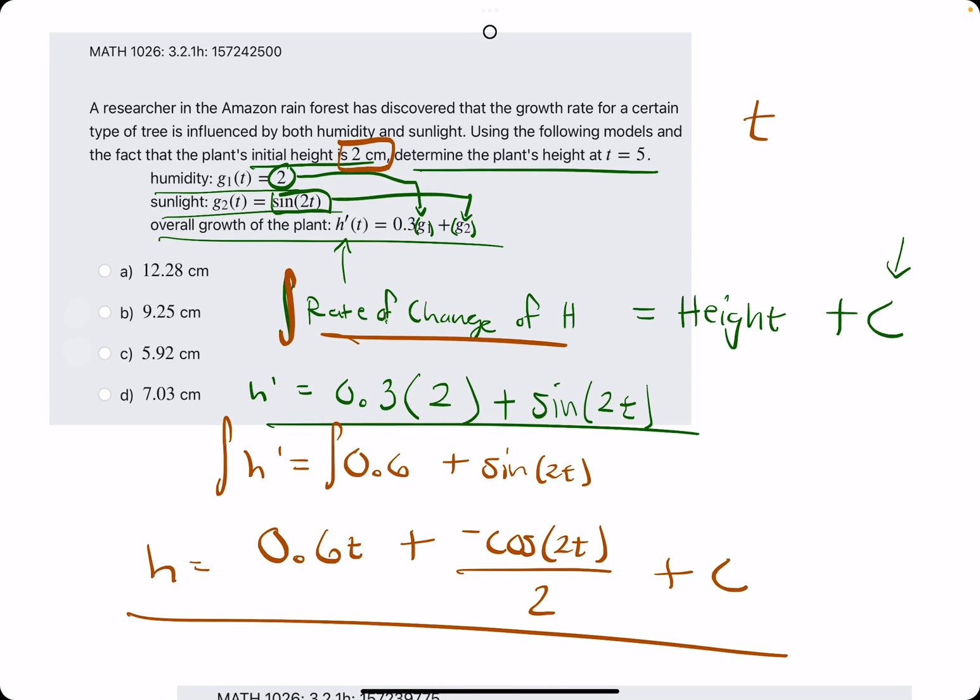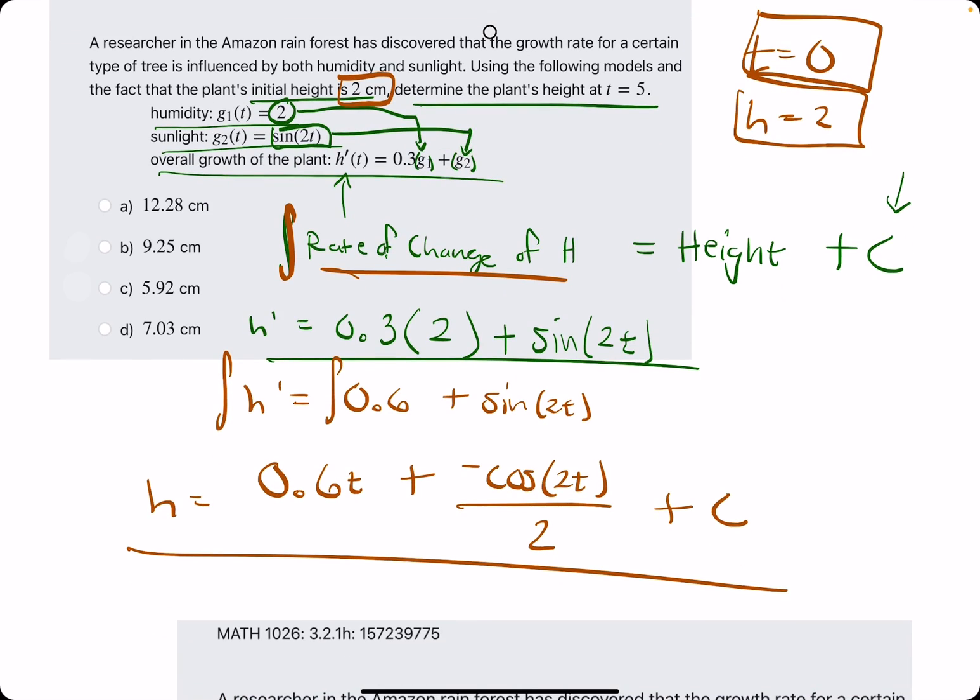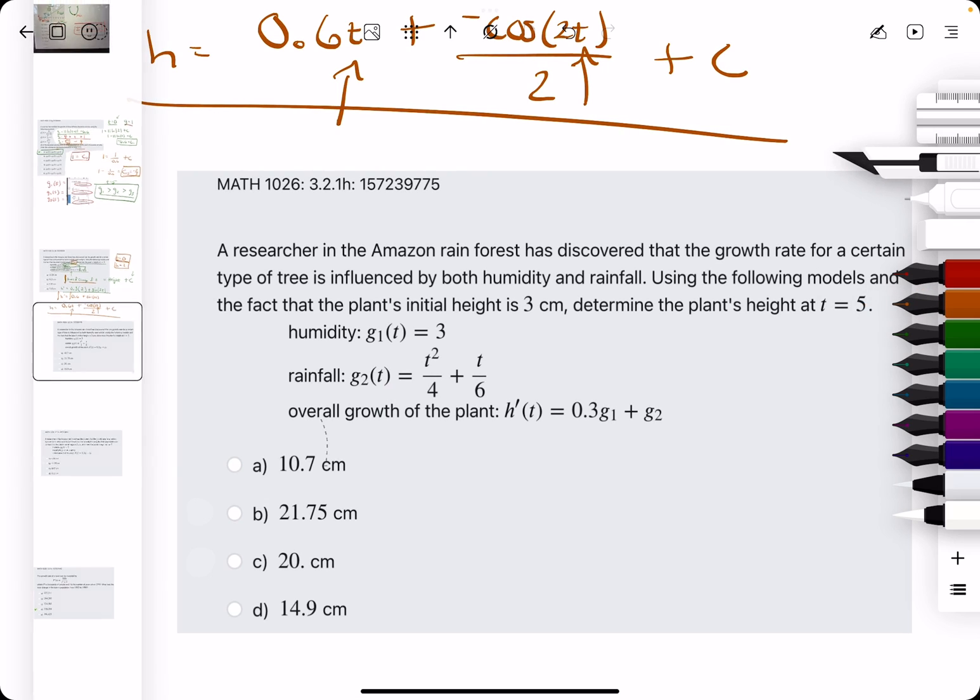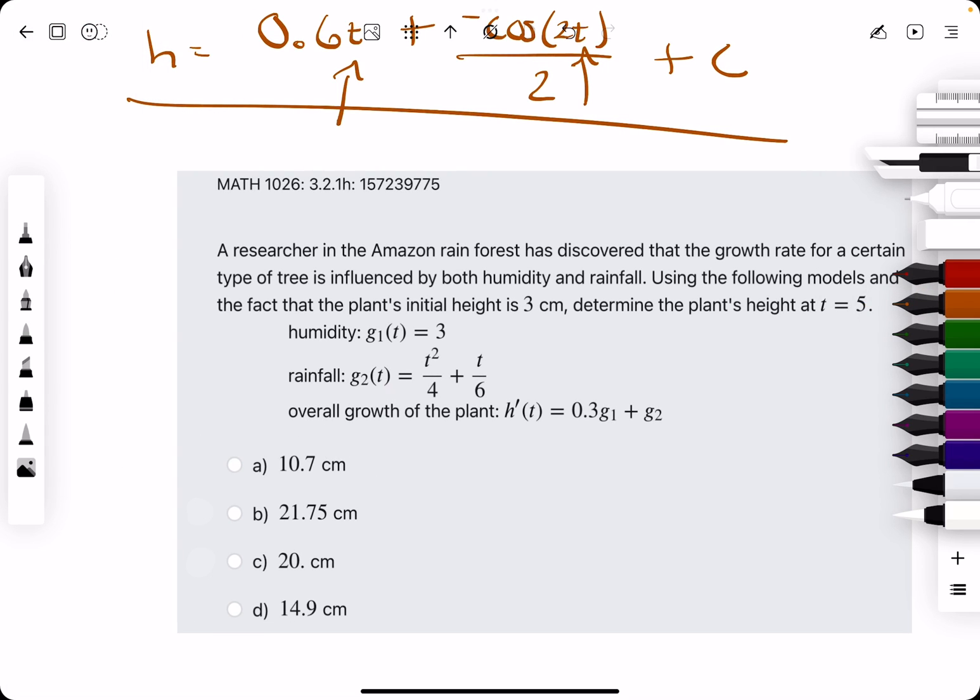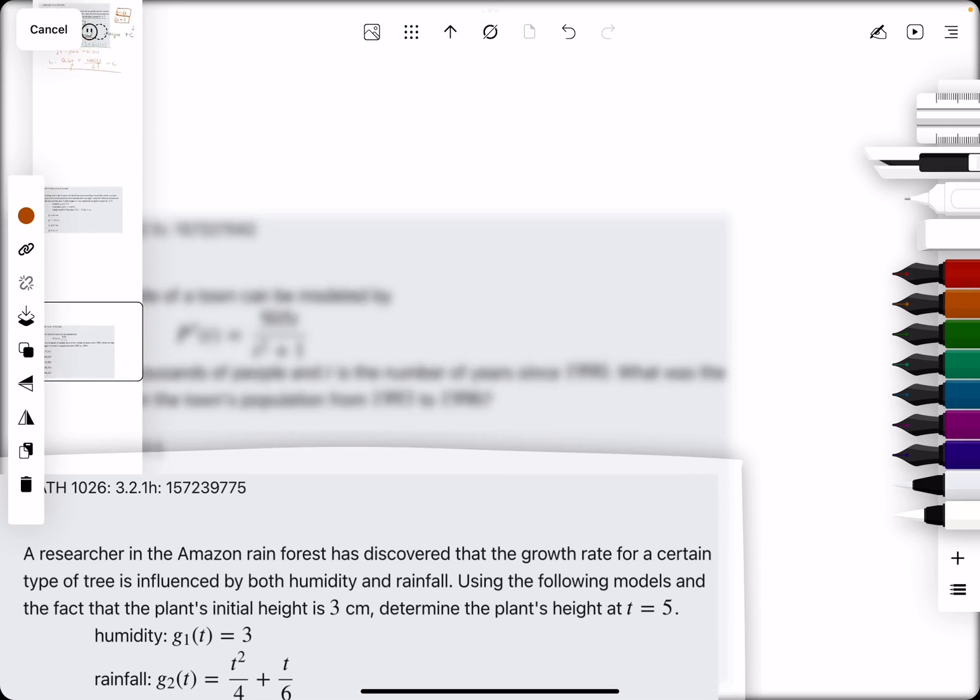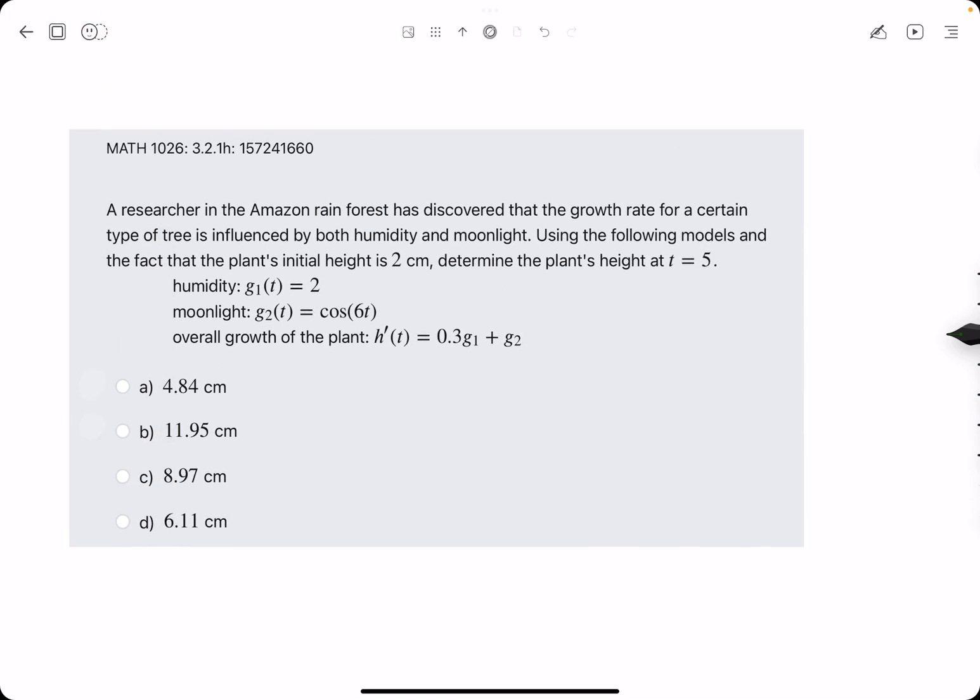If the initial height is 2, that means that h equals 2 when time equals 0, or initially. So if we plug in 0 to t, we're plugging in 0 here and here, and I'm running out of space, so let me move this one down. We'll deal with this one later.